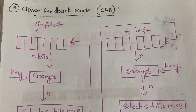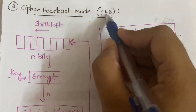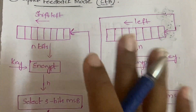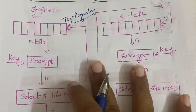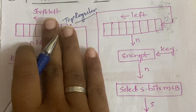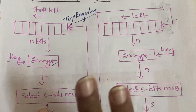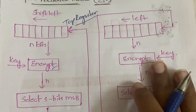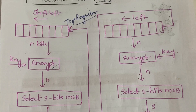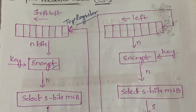In cipher feedback mode — CFB for short — you have something new: a register called the shift register or top register. You'll have it on both the encryption side and the decryption side. On both sides you will be using the encrypt function only. The size of that shift register is n bits — it can accommodate n bits.